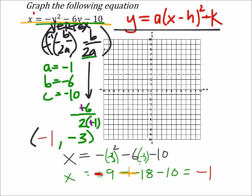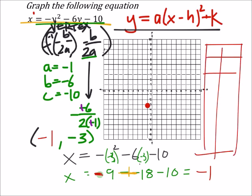So let's graph this. I'm just going to plot the vertex first, then I'll choose values of y in a table to graph the rest accurately. The vertex is at negative one, negative three — that point right there in red. Since x depends on y, I'll choose y-values in the table. The vertex corresponds to y equals negative three giving x equals negative one.